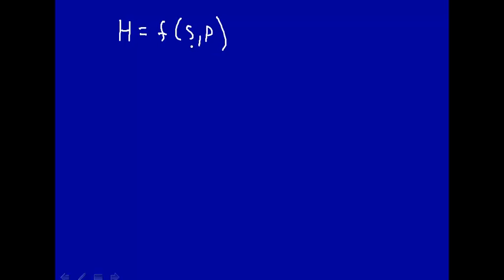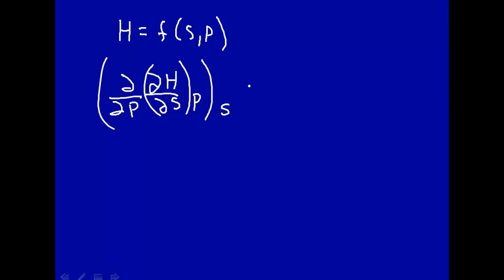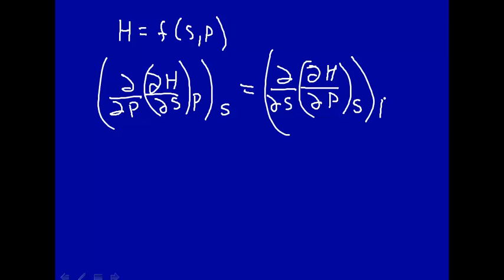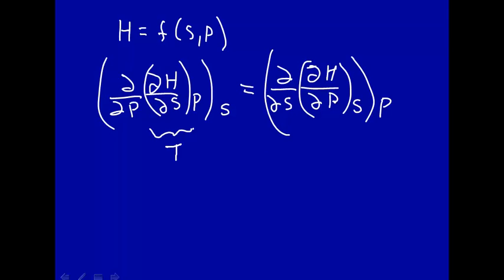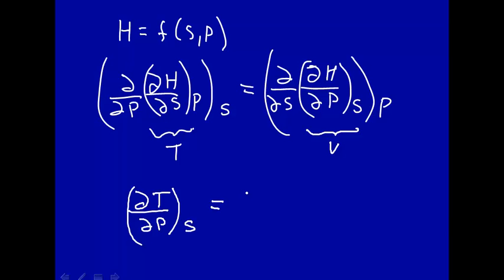Let's do the same for the other three functions. H, enthalpy, is a function of s and p — entropy and pressure. So it doesn't matter how we take the derivative: we take the derivative with respect to s at constant p, and then with respect to p at constant s, or vice versa. How h changes with s at constant p is temperature, and how h changes with p at constant s is volume. So here's another Maxwell relation: how temperature changes with pressure at constant entropy equals how volume changes with entropy at constant pressure.